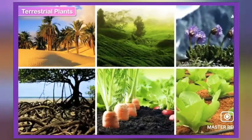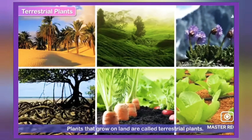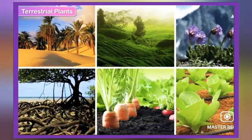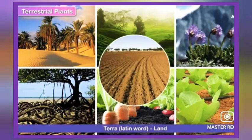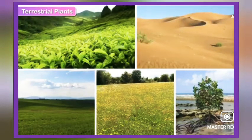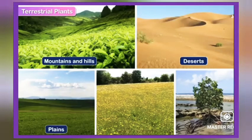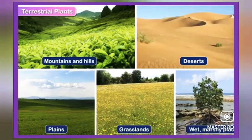Terrestrial plants: plants that grow on land are called terrestrial plants. They get their name from the Latin word 'terra', meaning land. Terrestrial plants grow on different landforms such as mountains and hills, deserts and plains, grasslands and wet marshy places.